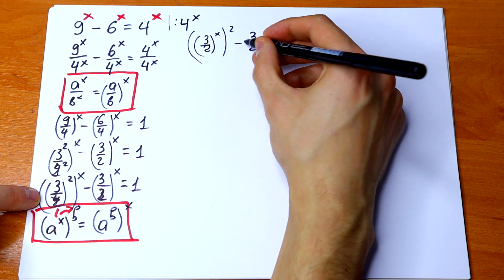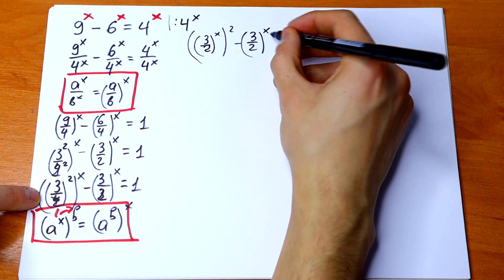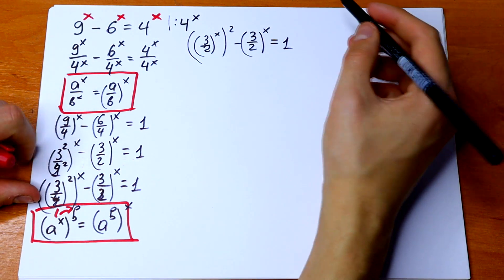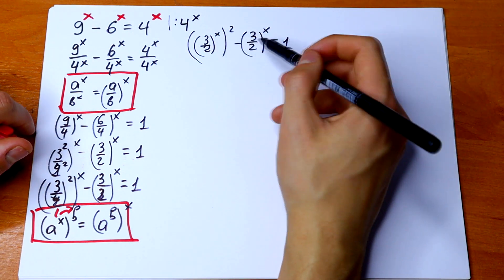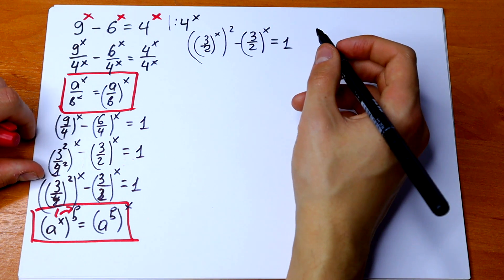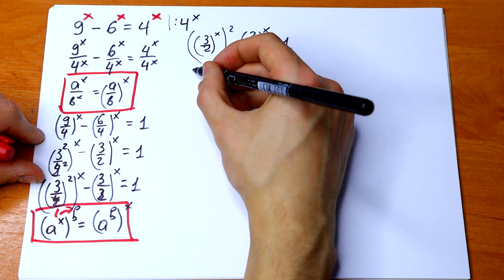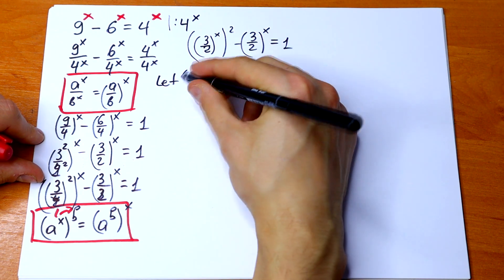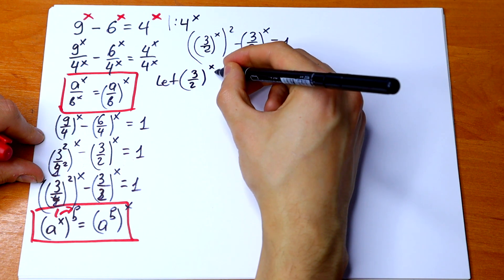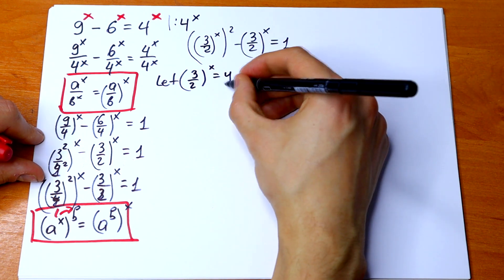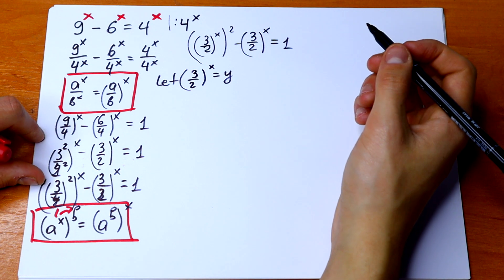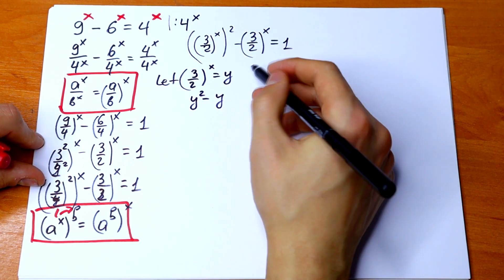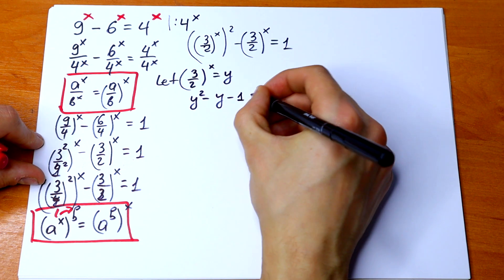Applying this, we get ((3/2)^x) squared minus (3/2)^x equal to 1. We have a really good case, because both terms involve (3/2)^x. So we can use a substitution: let y equal (3/2)^x. This gives us the quadratic equation y squared minus y minus 1 equal to 0.